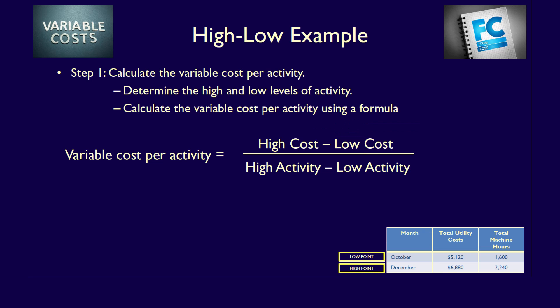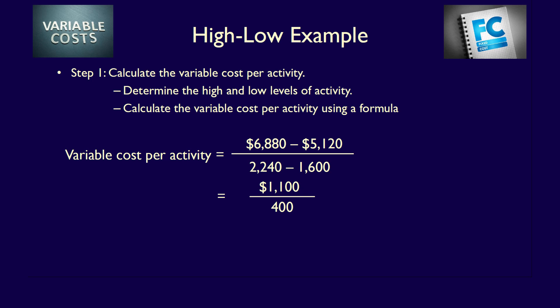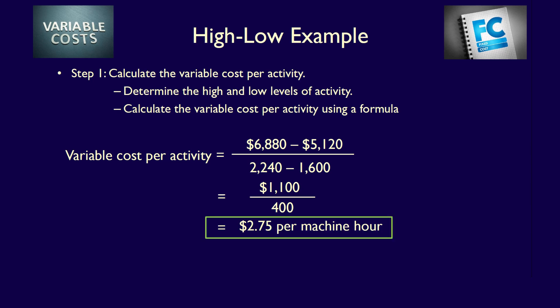Let's apply our numbers to the formula. Variable cost per activity equals high cost of $6,880 minus low cost of $5,120, all divided by high activity of 2,240 machine hours minus low activity of 1,600 machine hours. This equals $1,760 divided by 640 machine hours, which equals $2.75 per machine hour. So for every machine hour, the company incurs $2.75 of variable utility costs.